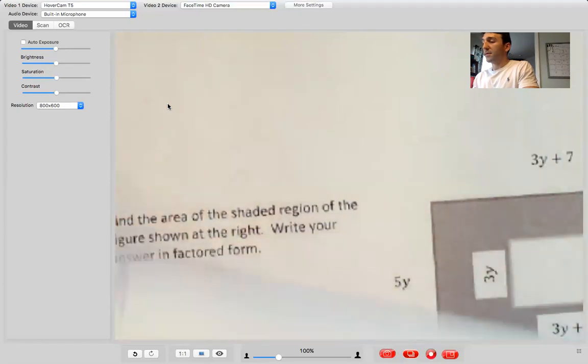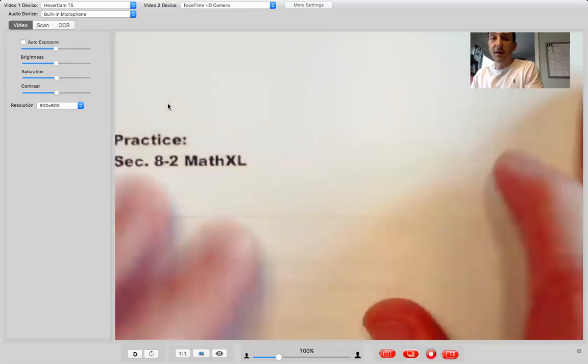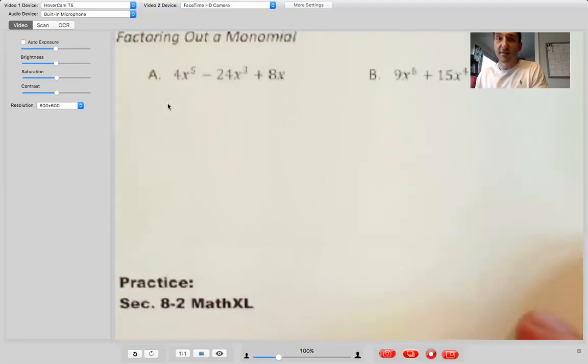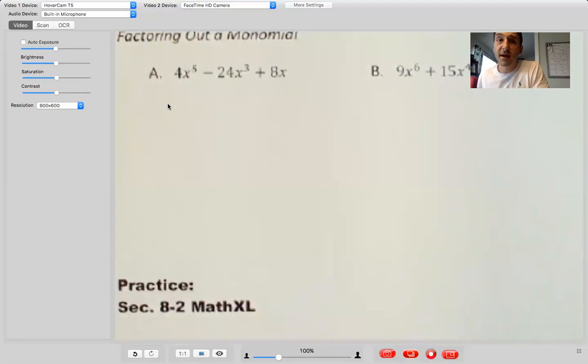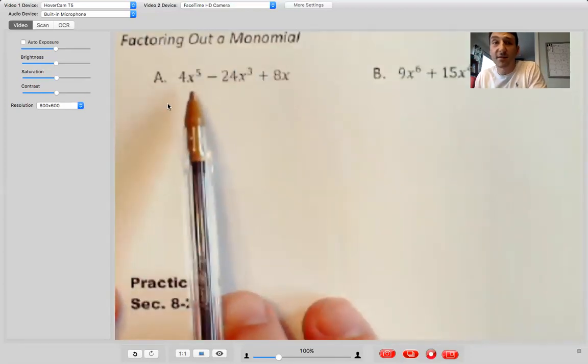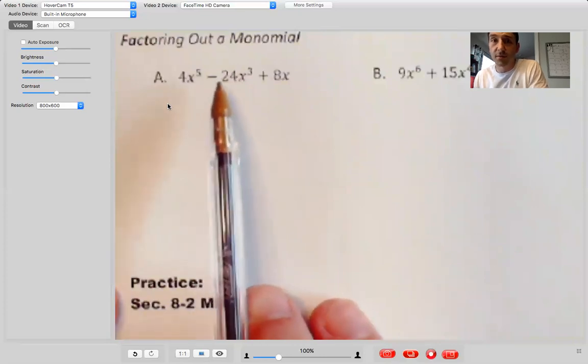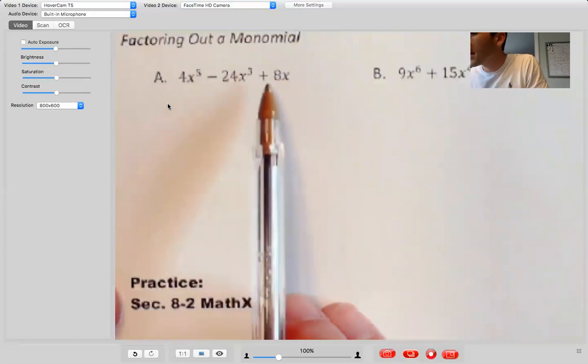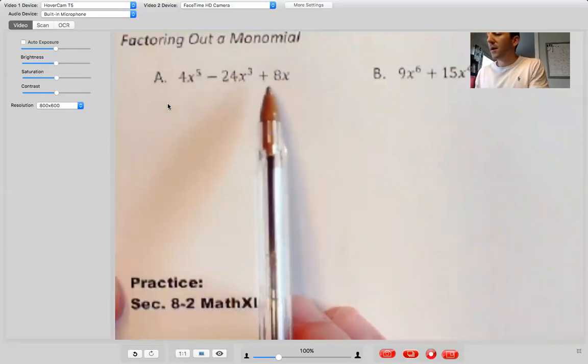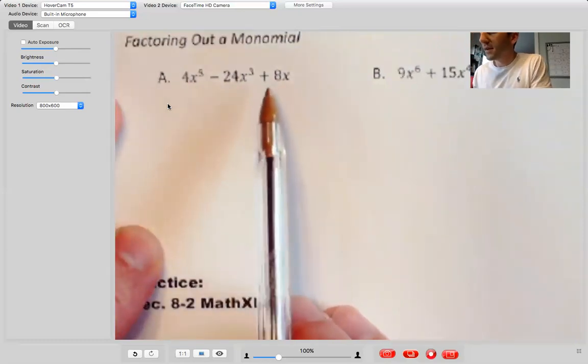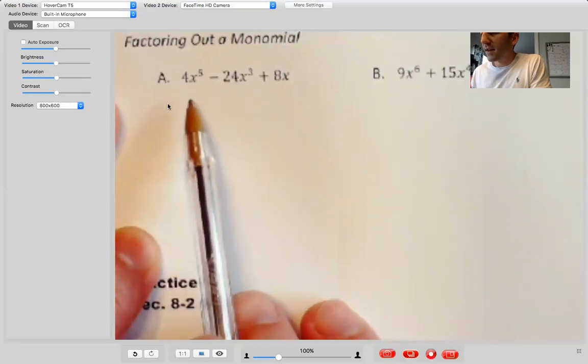Okay. So example three is where we get to our second learning target, actually factoring out a monomial. And this is the exact same thing as using the distributive property, except we're working backwards. Okay. So this would be like the answer in example one, we want to give it a question. So kind of like one of those jeopardy questions I talk about sometimes in class. Step one is we want to figure out what's the GCF. So that goes back to our last example.